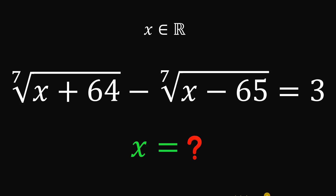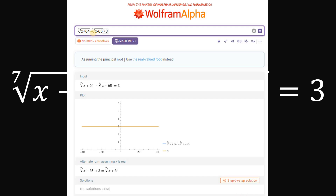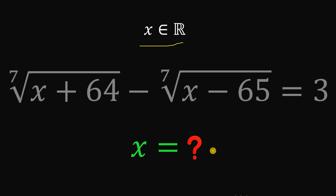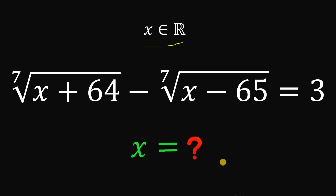Can you solve this math challenge? I tried to use Wolfram Alpha to get some answer to this equation: 7th root of (x + 64) minus 7th root of (x - 65) equals 3. Wolfram Alpha answers that no solution exists. So even Wolfram Alpha fails to answer this equation. Given that x is a real number satisfying this equation, what is the value of x? Pause and see if you can answer this.